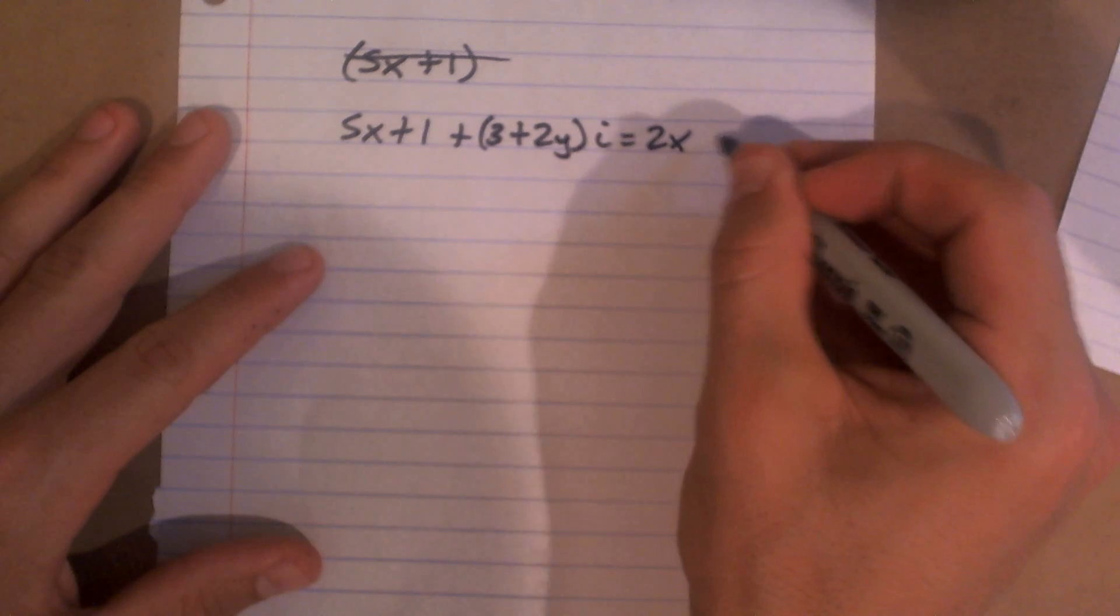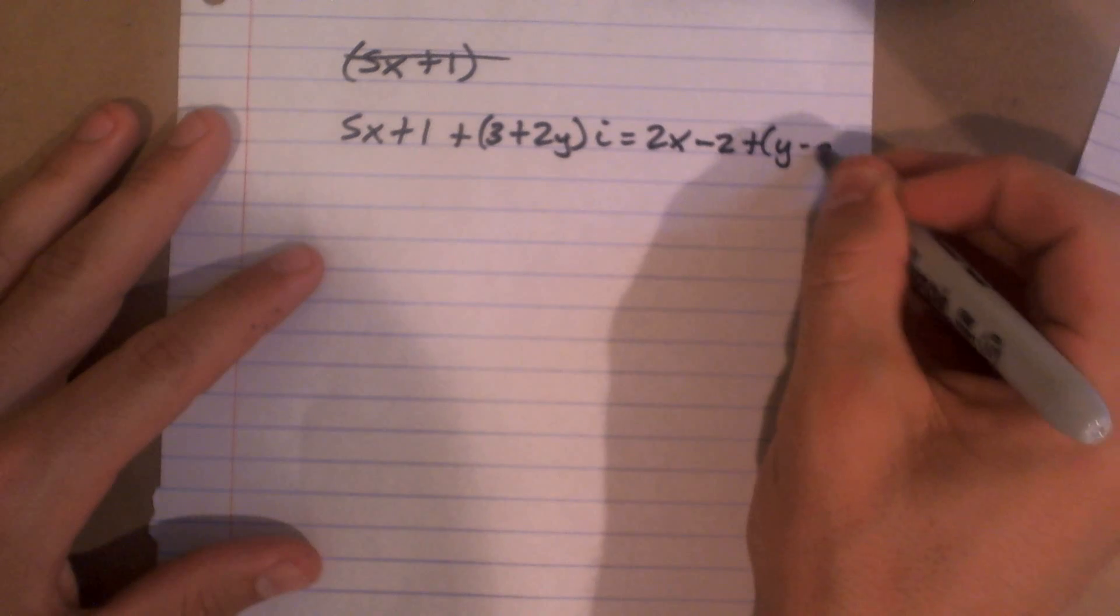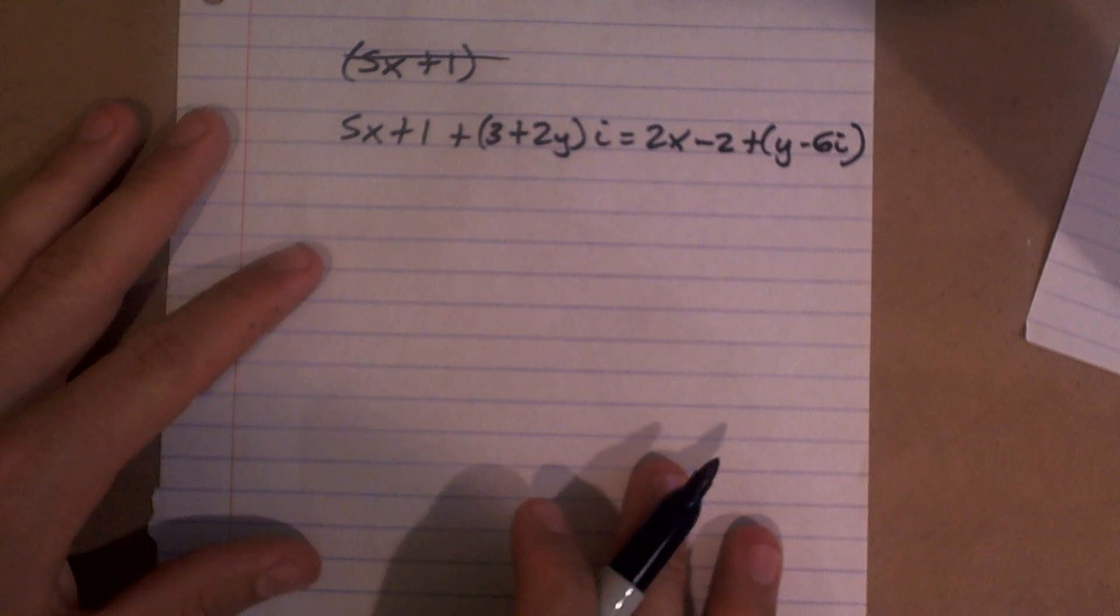equals 2x minus 2 plus y minus 6i. Right? That's it?